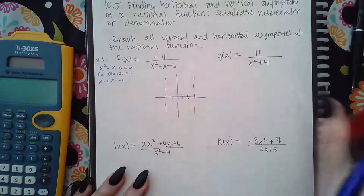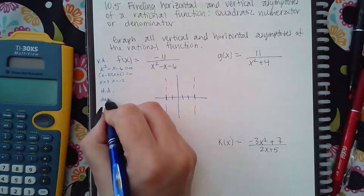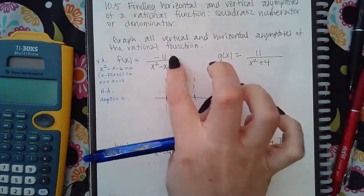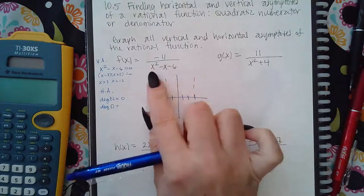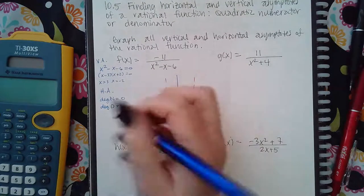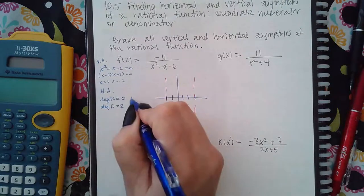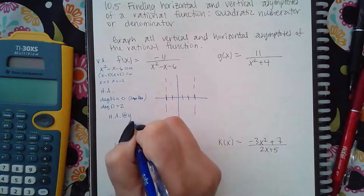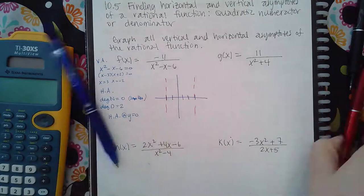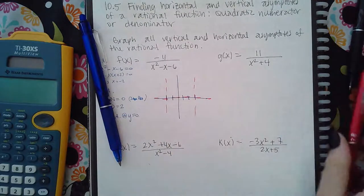For the horizontal asymptote, I need to talk about degrees. The degree of the numerator equals zero because there are no x's, and the degree of the denominator equals two because the highest exponent is two. Since the numerator degree is smaller than the denominator degree, there is automatically a horizontal asymptote at y equals zero, which lies on top of the x-axis.